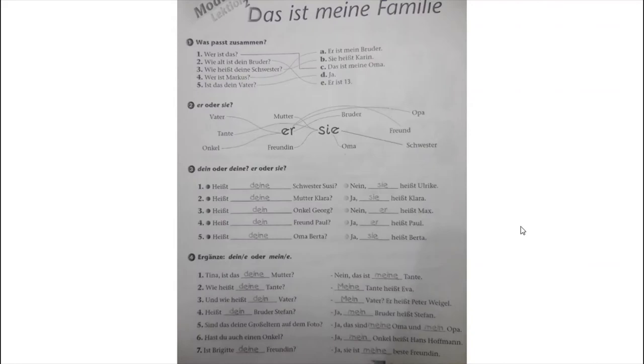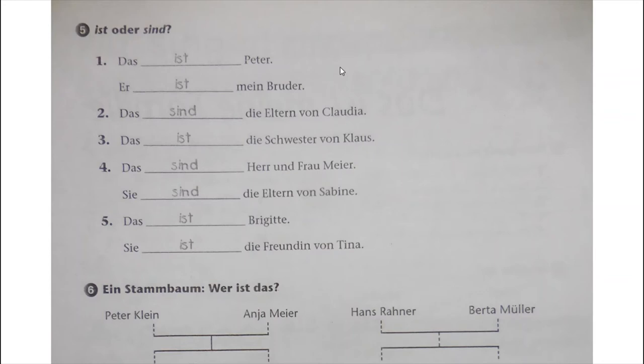We move to number 5: Ist oder sind. We use 'ist' for singular and 'sind' for plural. Nummer 1: Das ist Peter - singular. Er ist mein Bruder. Nummer 2: Das sind die Eltern von Claudia - plural.